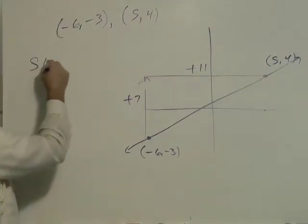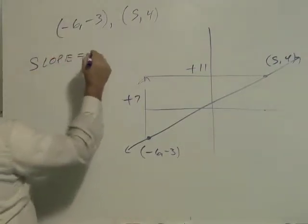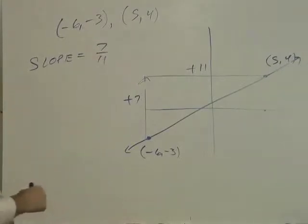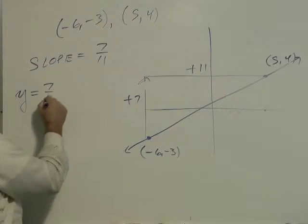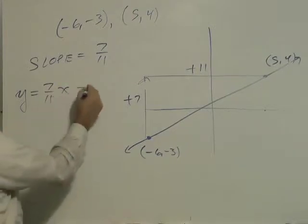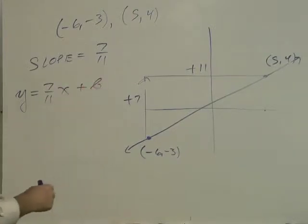Which means my slope is rise over run, 7 over 11. So the equation of the line starts off y equals 7 over 11 x plus y-intercept b.